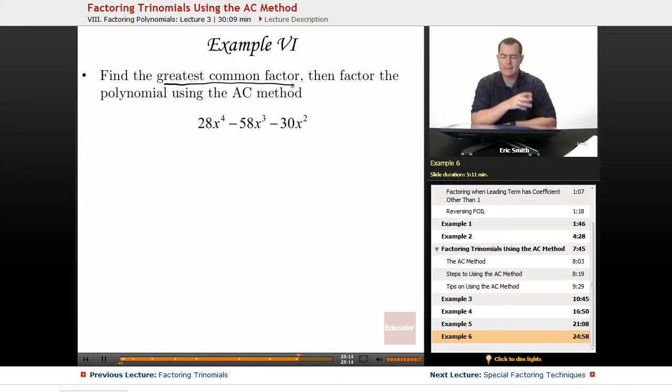Furthermore, they all have an x squared in common. So before we even start the AC method, let's go ahead and pull out that common term first. Let's see, what do they have in common? Well, everything is divisible by 2 and they all have an x squared. So let's take out a 2x squared.